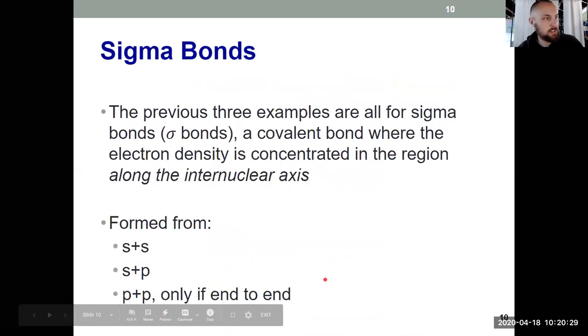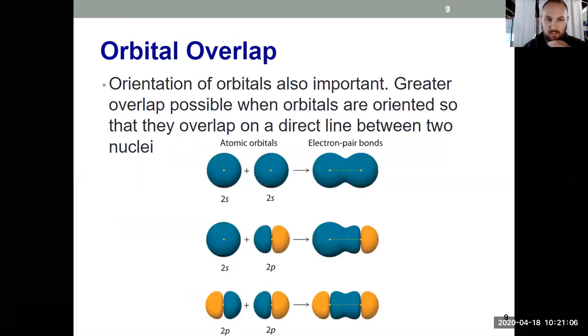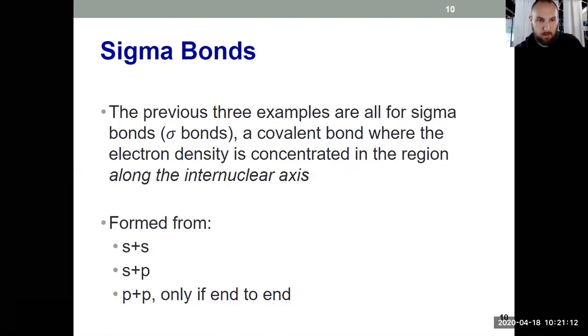Our orbitals have to overlap straight on with one another. And what's shown on this slide is three different ways to form what's known as a sigma bond, which is kind of an oversimplification. You can think about that as a new word for a single bond. The definition of a sigma bond is a covalent bond where the electron density is along the internuclear axis, meaning it's directly between the two nuclei. And we can do that three different ways, overlapping an S and an S, overlapping an S and a P, or overlapping two P orbitals, only if they're going end to end. So they have to go straight at one another. That's the only way to form a sigma bond, which is what we're seeing at the bottom of this slide. They have to approach one another head on. Those are three ways to form a sigma bond.